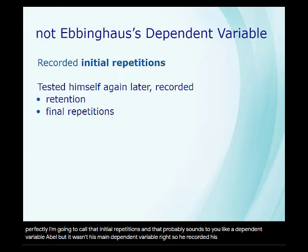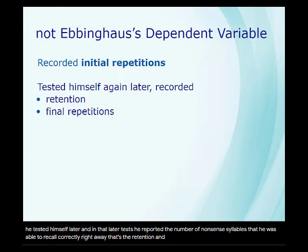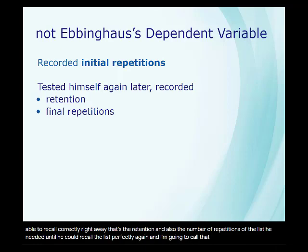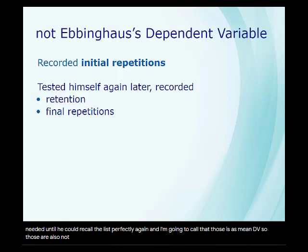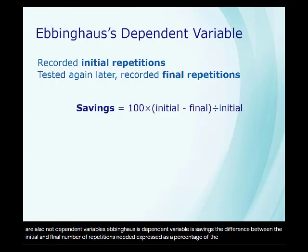He recorded his initial repetitions and then tested himself later. In that later test, he recorded the number of nonsense syllables that he was able to recall correctly right away — that's the retention — and also the number of repetitions of the list he needed until he could recall the list perfectly again, which I'm going to call his final repetitions. But neither of those is his main dependent variable. Ebbinghaus's dependent variable is savings: the difference between the initial and final number of repetitions needed, expressed as a percentage of the initial repetitions.